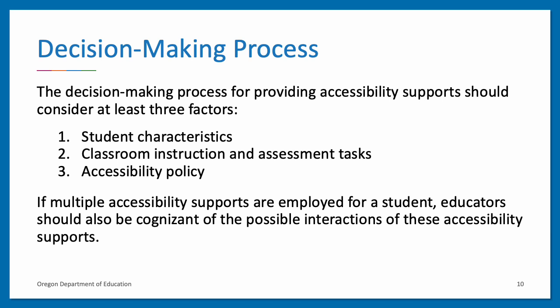The CCSSO Accessibility Manual contains assistance in identifying or selecting various types of accessibility supports for students, including consideration of at least three factors. One, student characteristics: disabilities, language proficiency, and accessibility supports used in classroom instruction and on assessments, in order to access and perform with academic standards and state tests. Two, classroom instruction and assessment tasks: knowledge about what tasks are required in instruction and on state assessments, and ways to remove physical and other barriers inhibiting a student's ability to perform those tasks. Three, accessibility policy: accessibility policy for an assessment or part of an assessment and the consequences of those decisions.